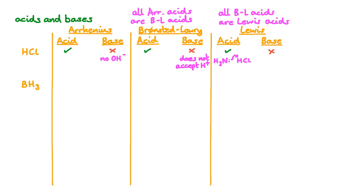Now let's take a quick look at BH3, borane. BH3 doesn't readily donate its protons, so we wouldn't consider it an Arrhenius acid or a Bronsted-Lowry acid. But BH3 will accept a lone pair from a Lewis base. And BH3 doesn't fit the requirements for Arrhenius, Bronsted-Lowry, or Lewis bases — we know it can't be a Lewis base because it doesn't have any lone pairs at all.